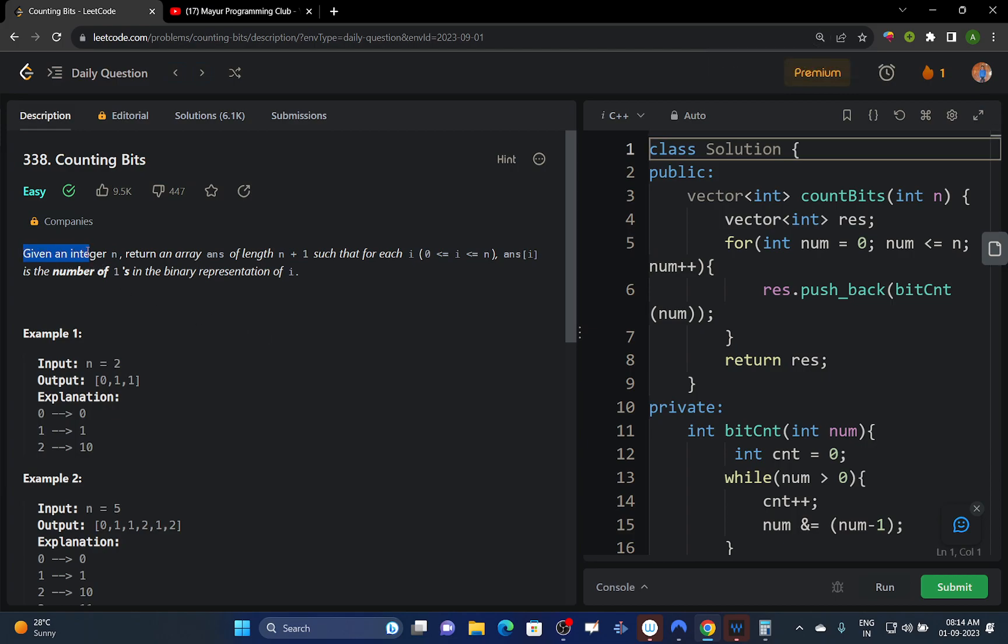So given an integer n, you have to return an array answer of length n plus 1 such that each index in that array represents a number and the element at each index is the number of set bits in that number.